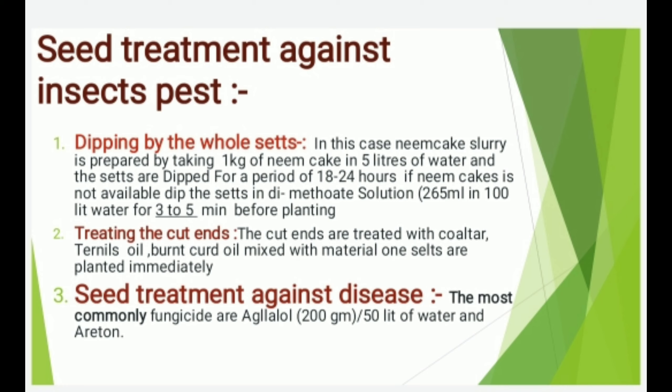Seeds and Sowing — Seed Treatment Against Insects and Pests: First method — Dipping of whole sets: Neem cake slurry is prepared by taking 1 kg of neem cake in 5 liters of water, and the sets are dipped for a period of 18 to 24 hours. If neem cake is not available, use dimethoate solution — 265 ml in 100 liters of water — for 3 to 5 minutes before planting. Second method — Treating the cut ends: The cut ends are treated with coal tar, termite oil, or burnt curd oil mixed with malathion, and sets are planted immediately.